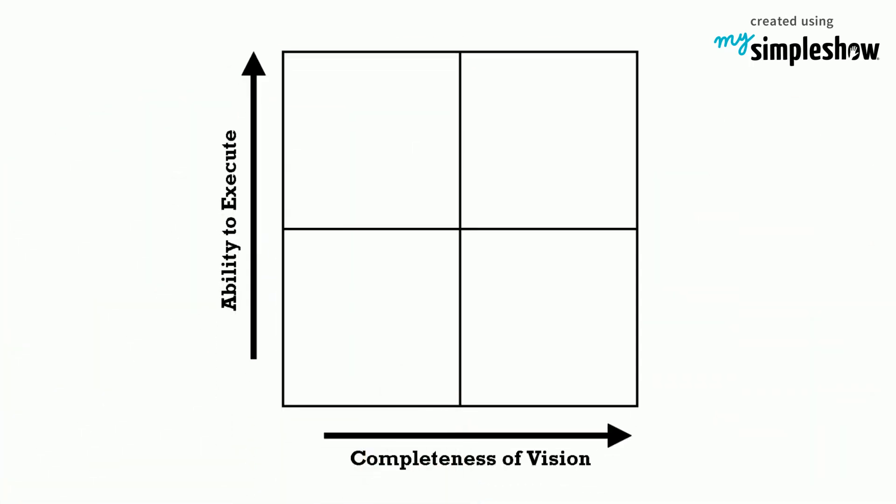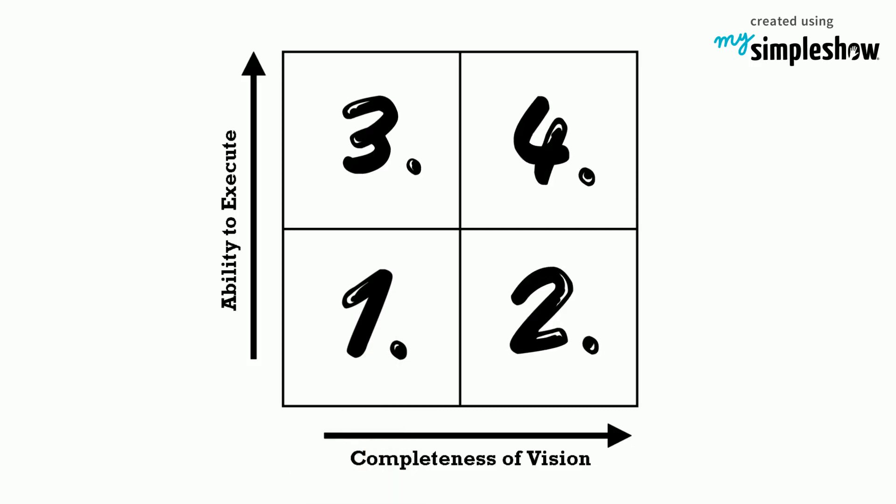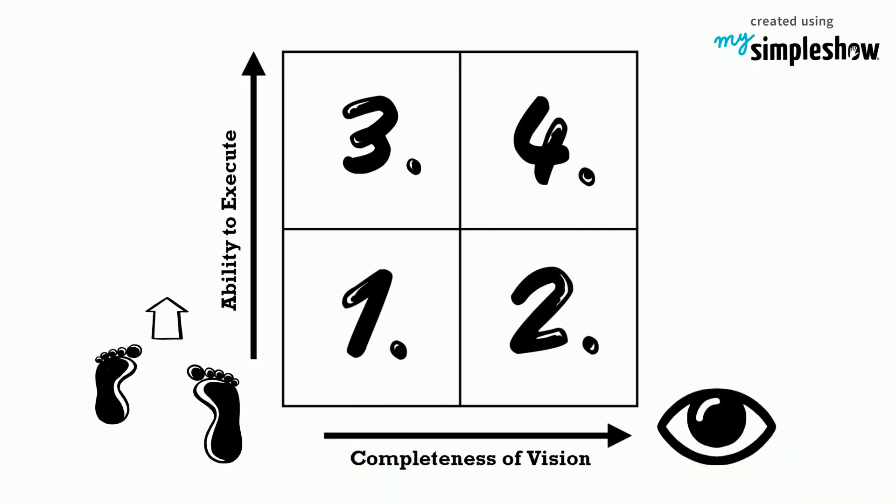Magic quadrants put competing businesses into four distinct sections, based on their completeness of vision as well as their ability to execute it.